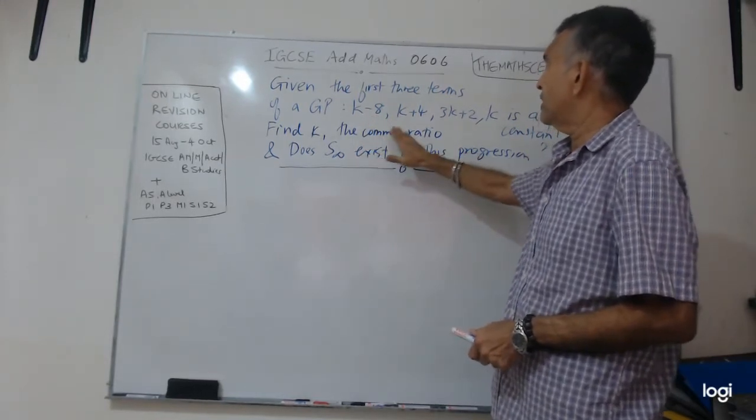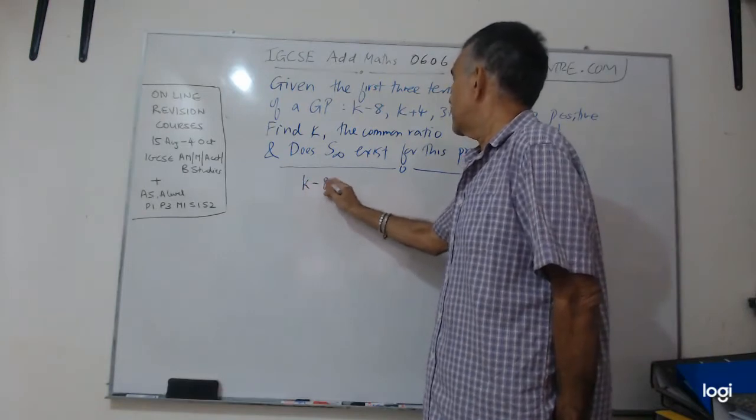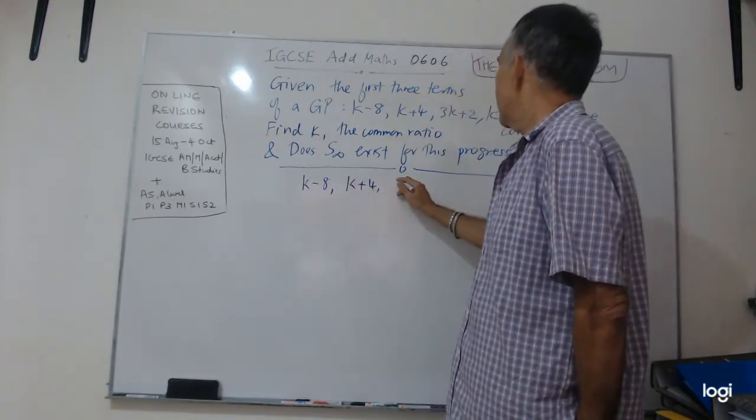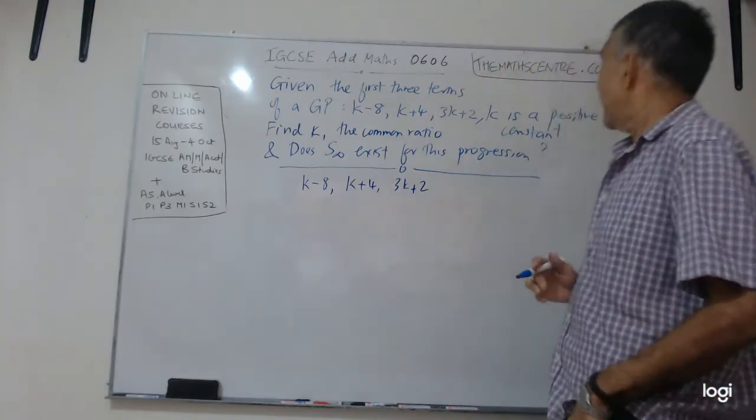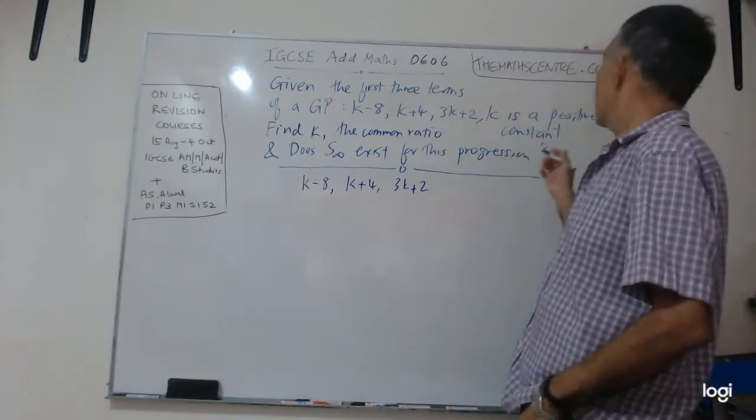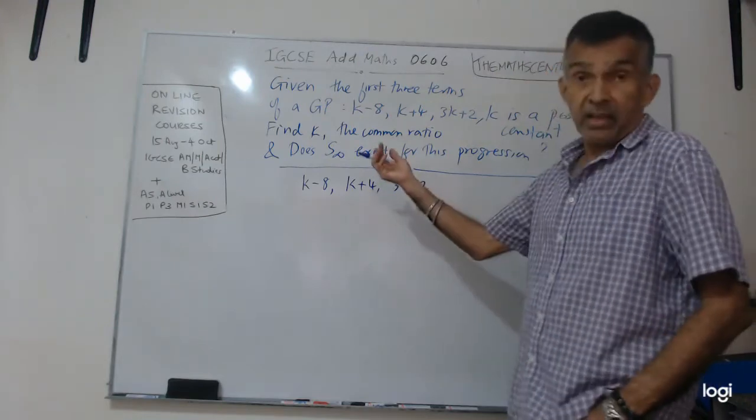K minus 8, first term. K plus 4, second term. 3K plus 2 is the third term. And they tell you that K is a positive constant.